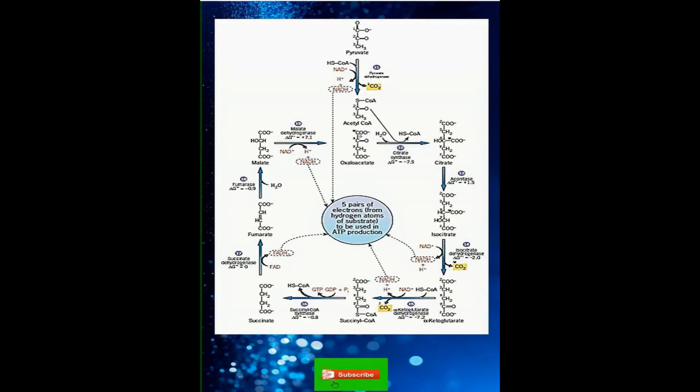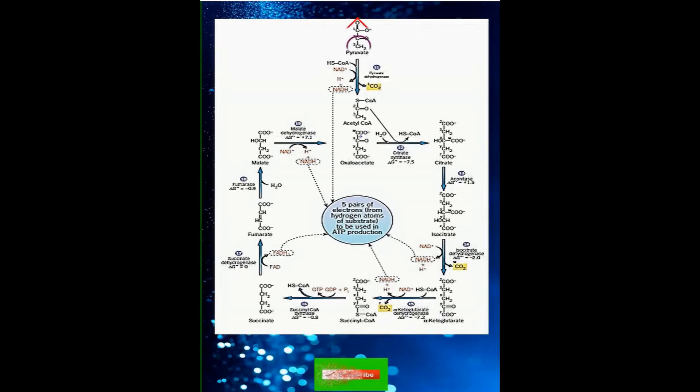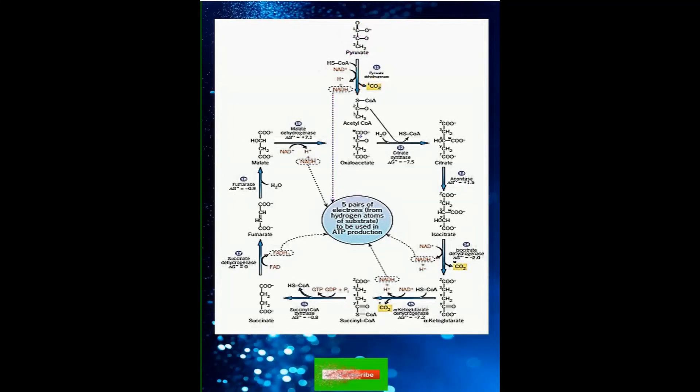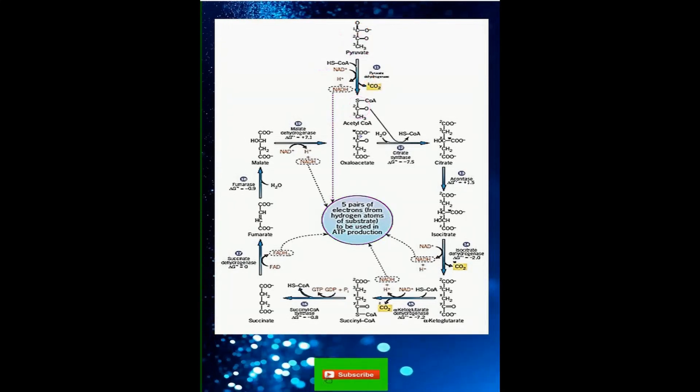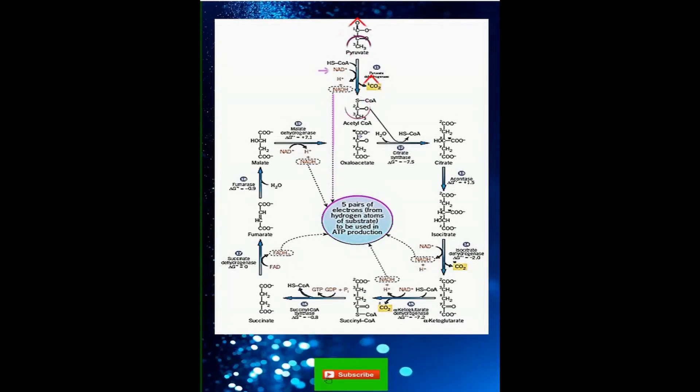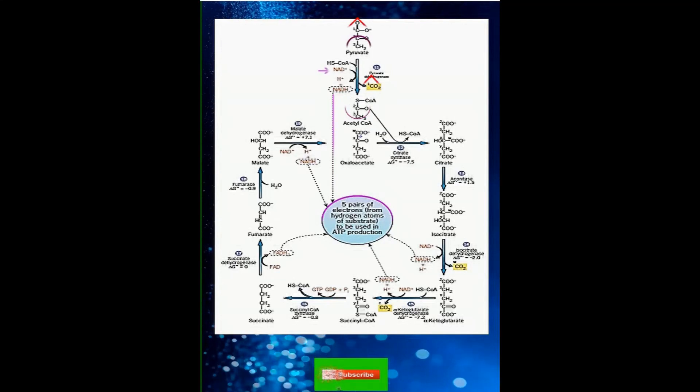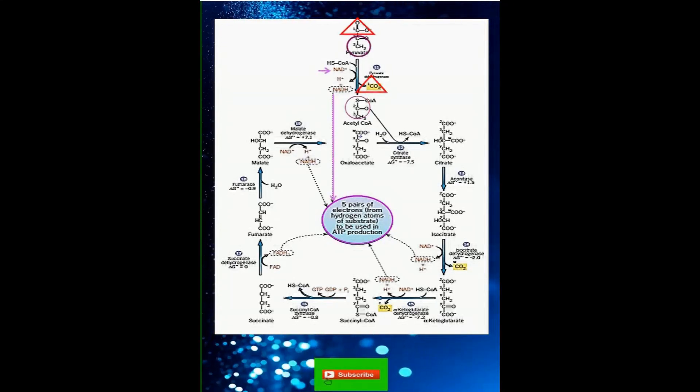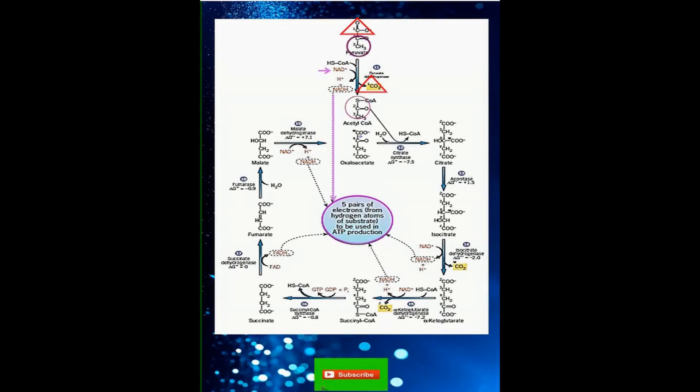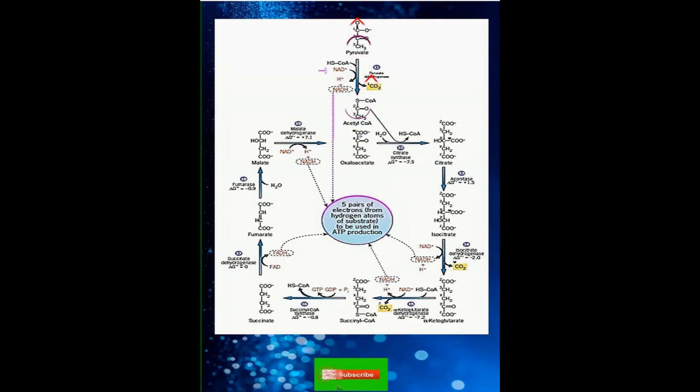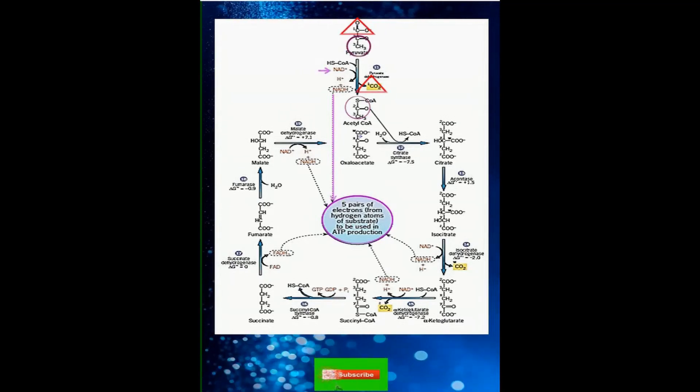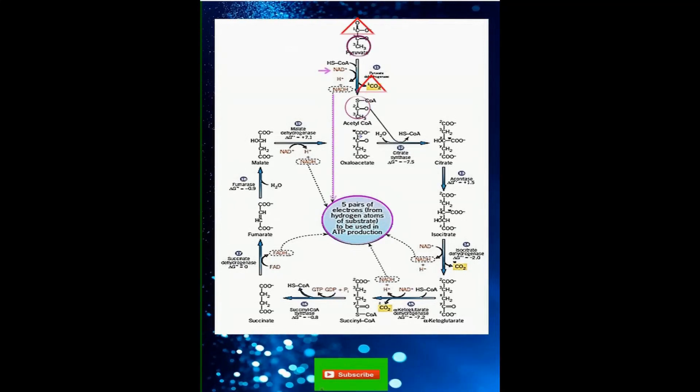Each 3-carbon pyruvic acid molecule undergoes conversion to a substance called acetyl coenzyme A. During this process, the pyruvic acid molecule is broken down to release 1 carbon dioxide and the remaining 2 carbon atoms are combined with coenzyme A to form acetyl CoA. In this process, electrons and hydrogen ions are transferred to NAD to form high energy NADH.